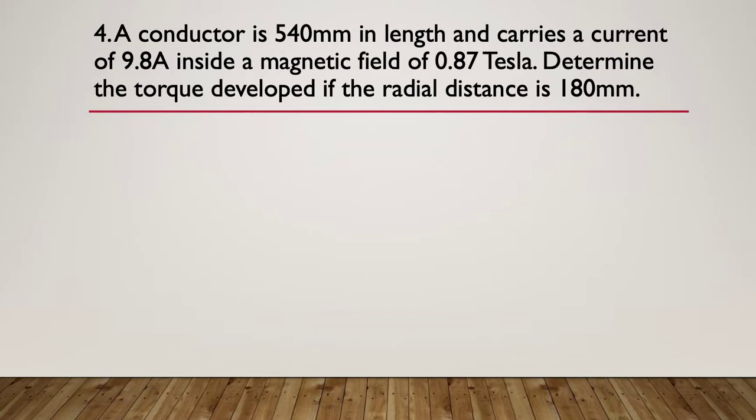Question four. A conductor is 540 millimeters in length and carries a current of 9.8 amps inside a magnetic field of 0.87 tesla. Determine the torque developed if the radial distance is 180 millimeters. So pause here while you get out the formula you need and think about it.